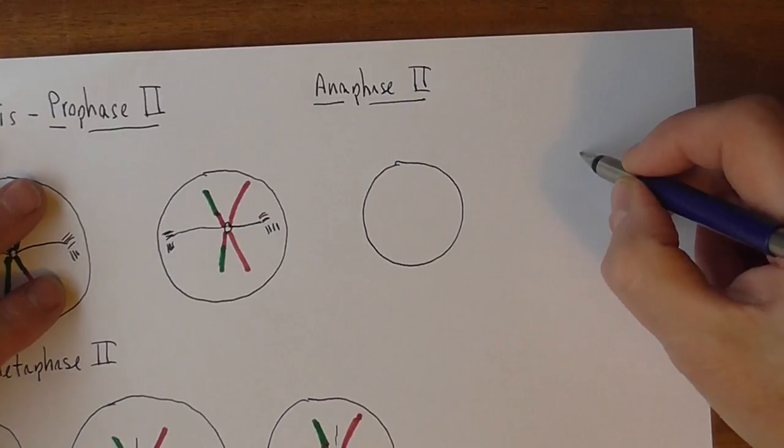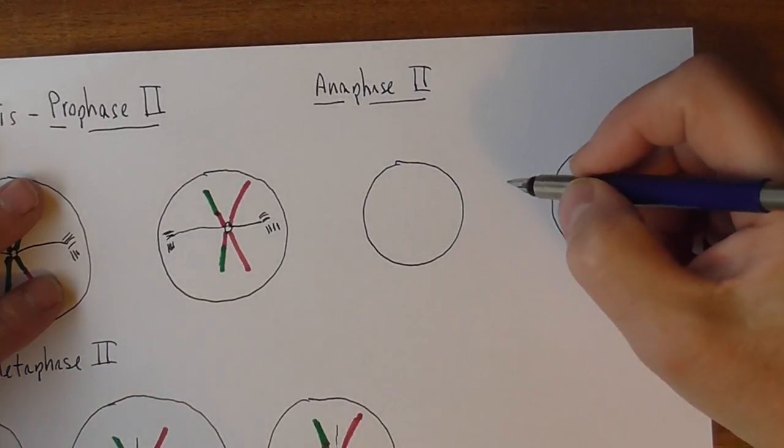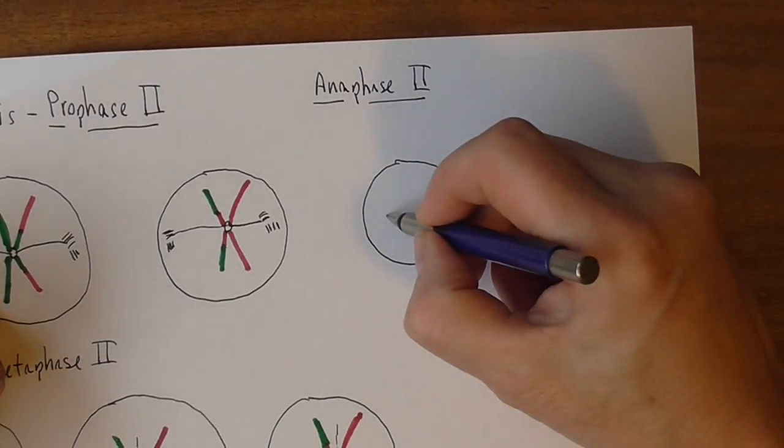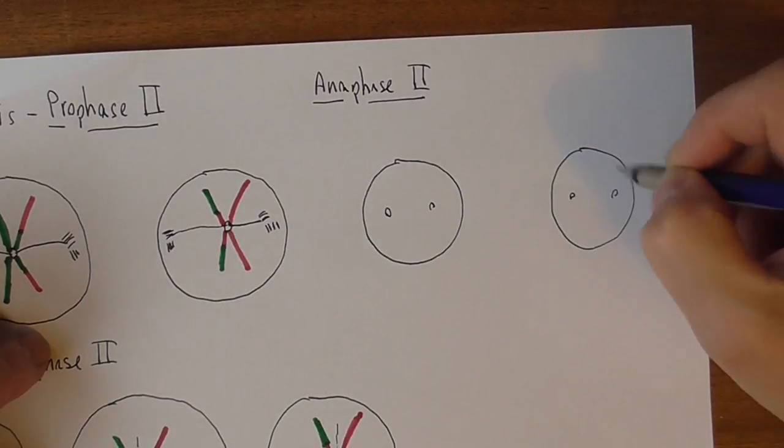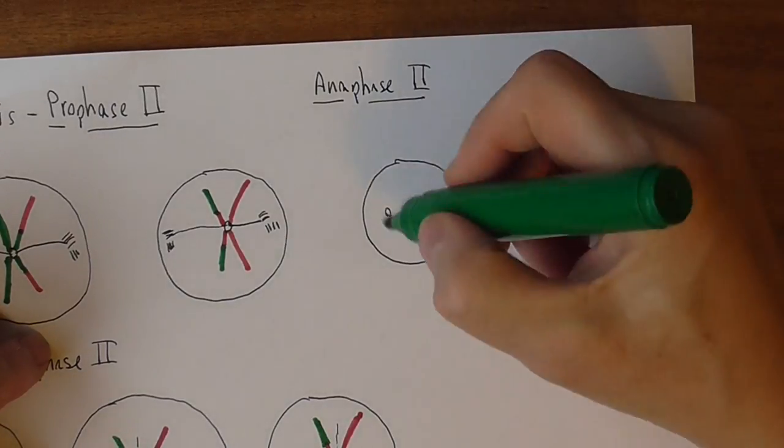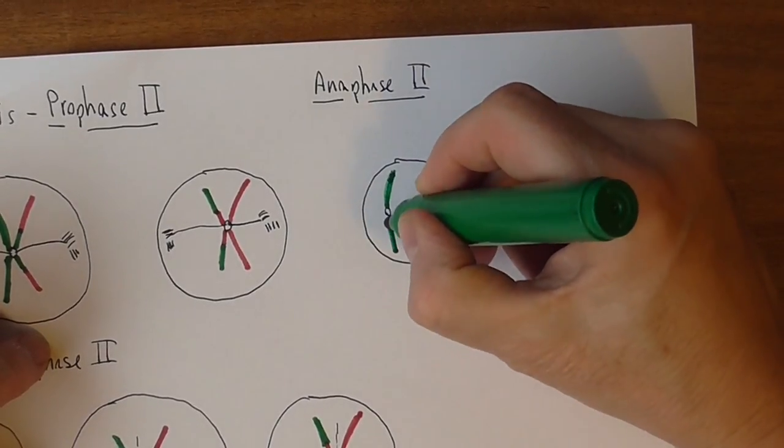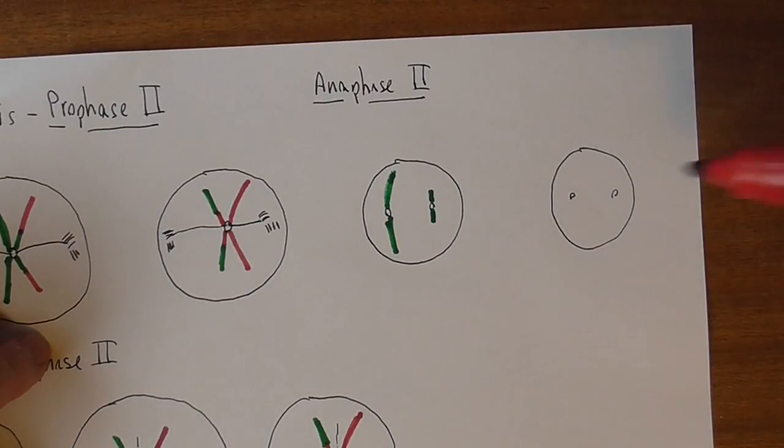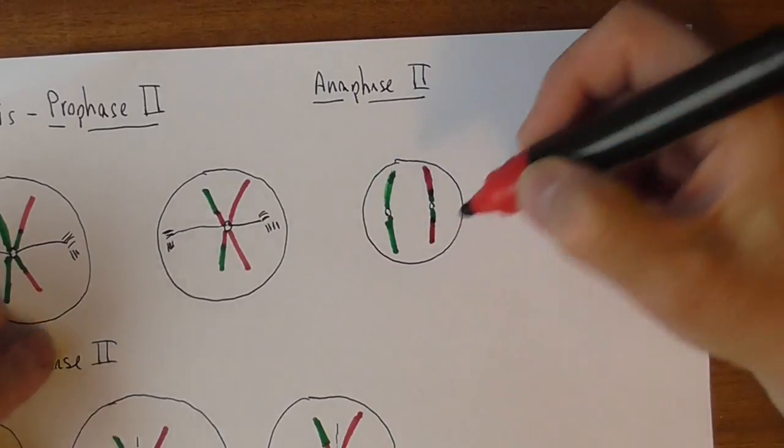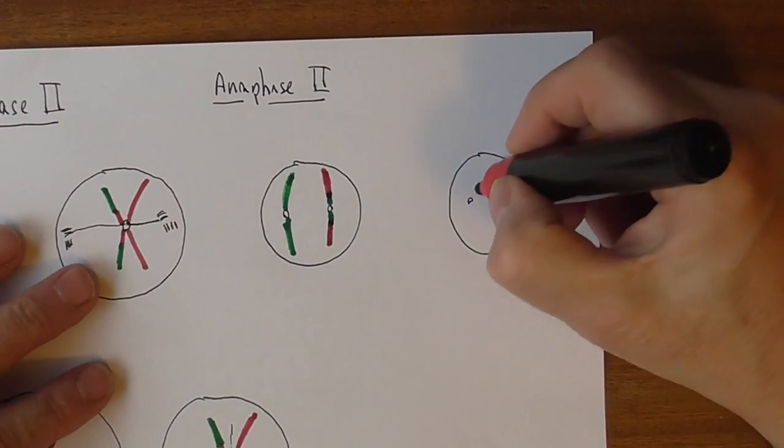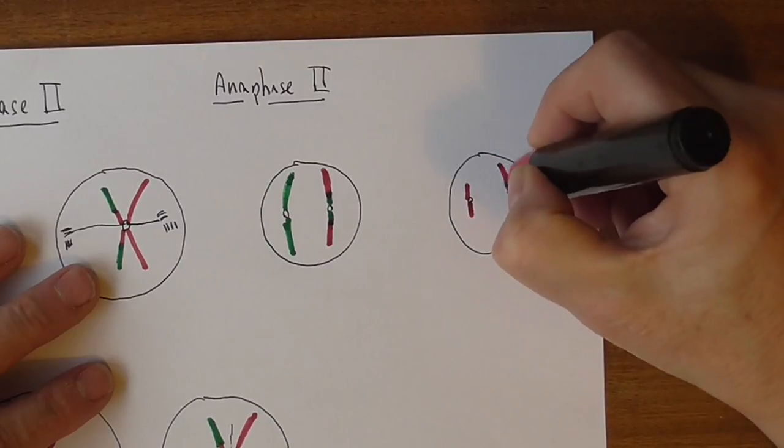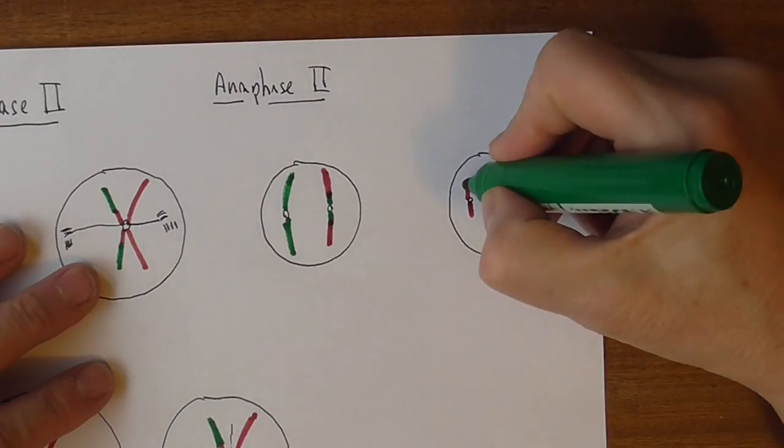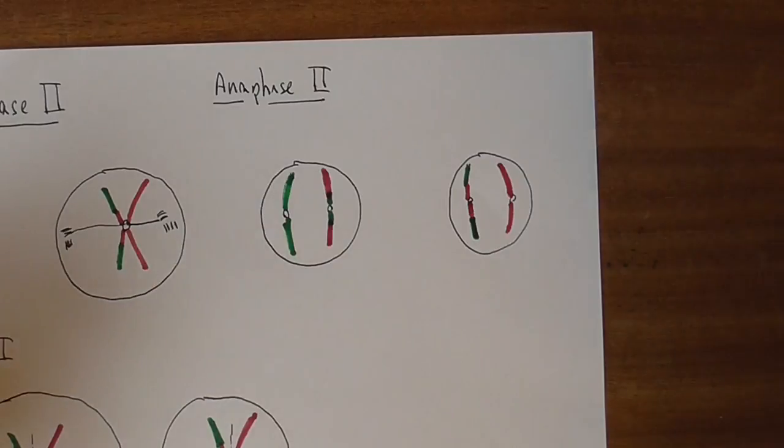Again we're dealing with two cells. And they finally are pulled apart by these spindles, by these meiotic spindles. So finally these pull apart and become chromosomes in their own right in anaphase 2. It's taken a while to get to this stage, but finally here we are.